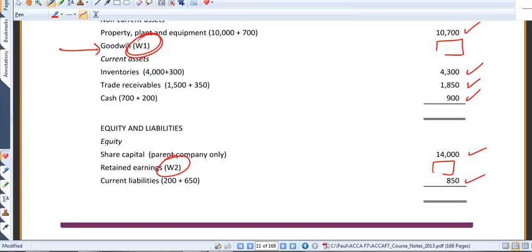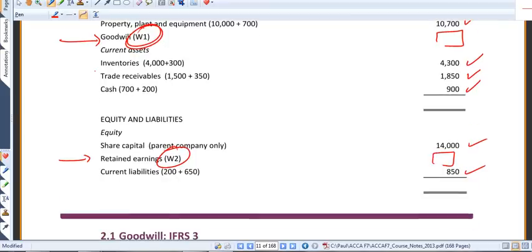You might be able to see that what I've got here are two blanks cross-referred to two workings. These two figures, goodwill and retained earnings, are going to be two core workings for us in any consolidation.